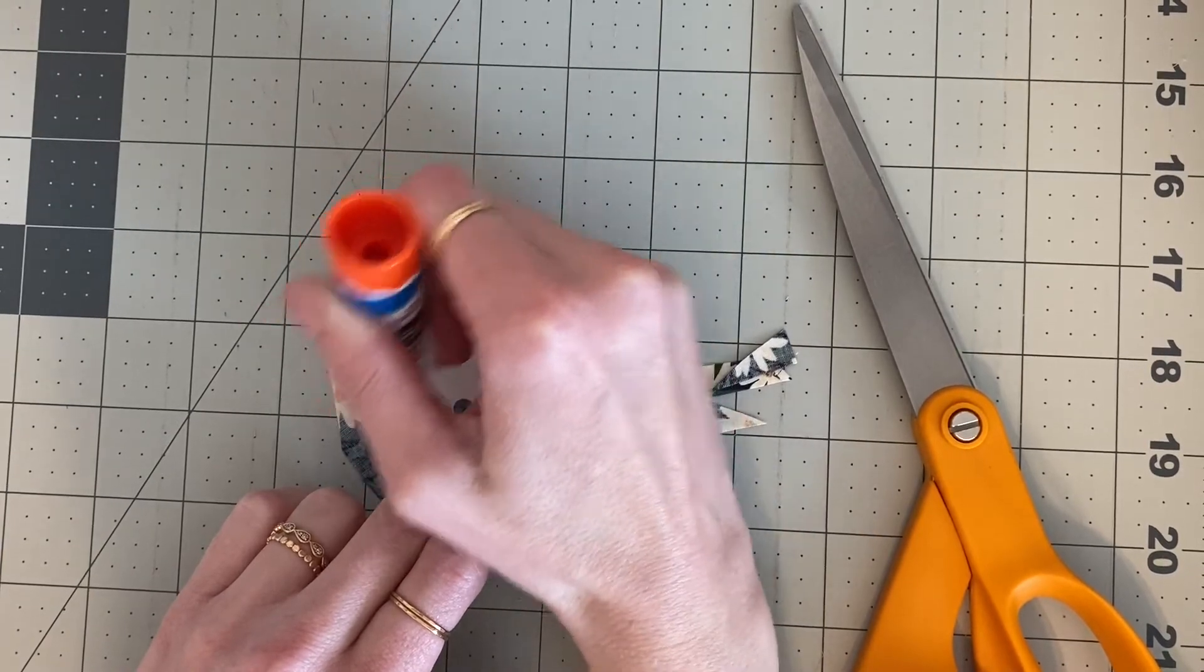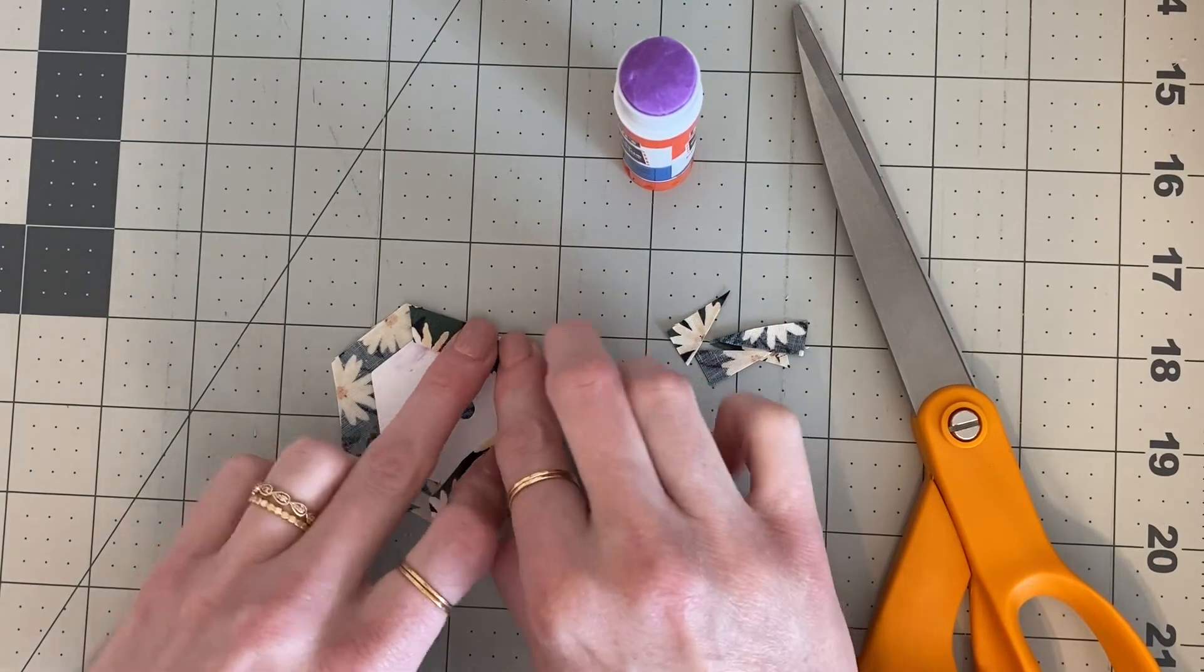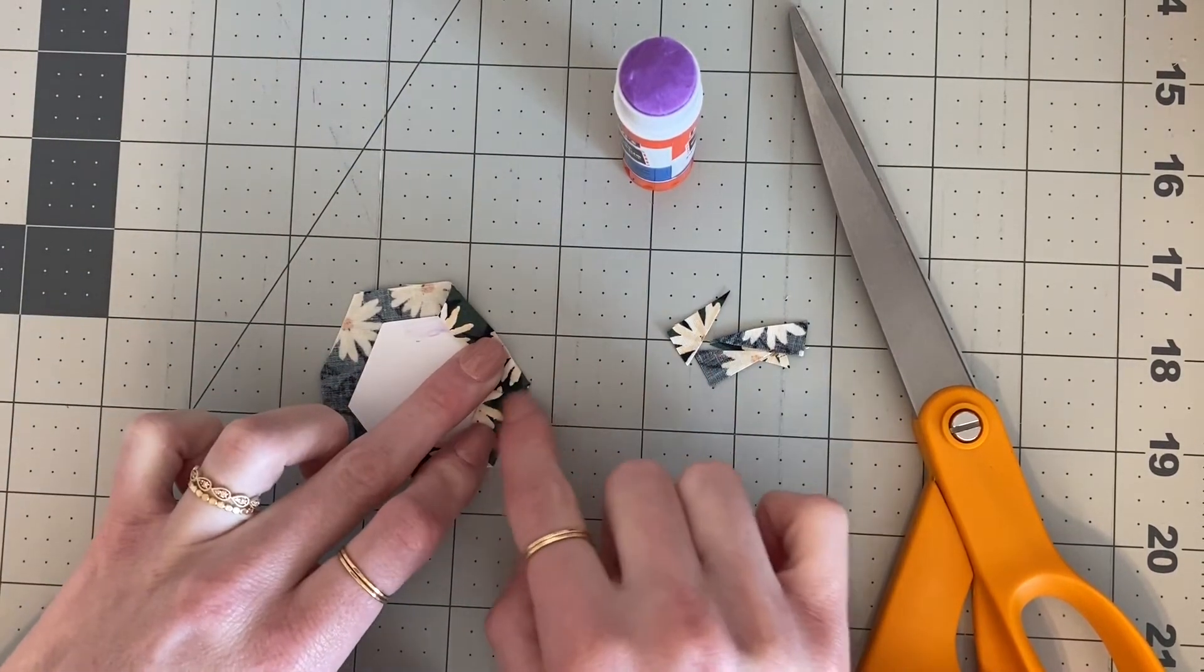And then I just keep my fingers on there while they're drying a little bit and continue on to the second one. Make sure you get nice crisp corners.